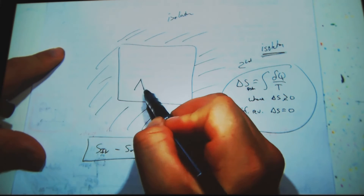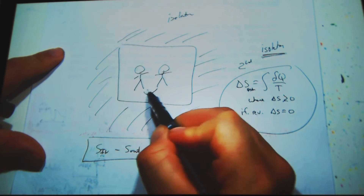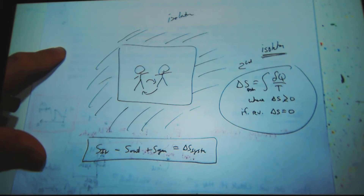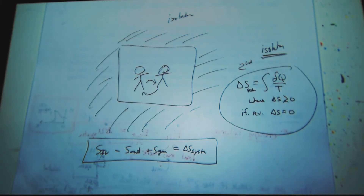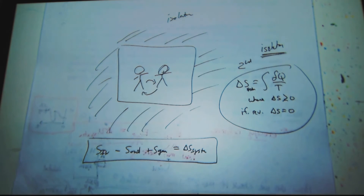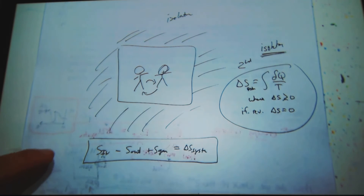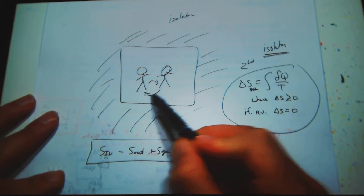So, I have an isolated system, and within my system, I have two stickmen doing ring around the rosy. The two stickmen inside the box doing ring around the rosy. I put two stickmen in the box — it looks like a pretty non-uniform temperature and mass distribution — but for the sake of it, let's not worry about that.